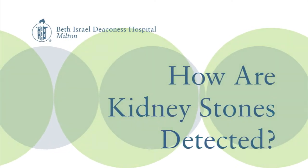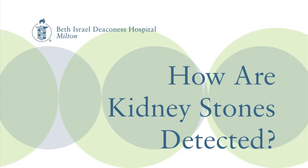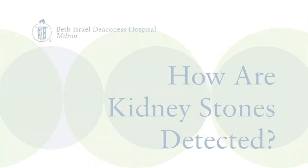The best way to detect kidney stones is imaging. The most sensitive method these days is a CAT scan of the abdomen and pelvis. Some of the older methods include plain film x-ray called a KUB. We also use ultrasound more commonly for screening patients and to see if the kidney is blocked by stones.